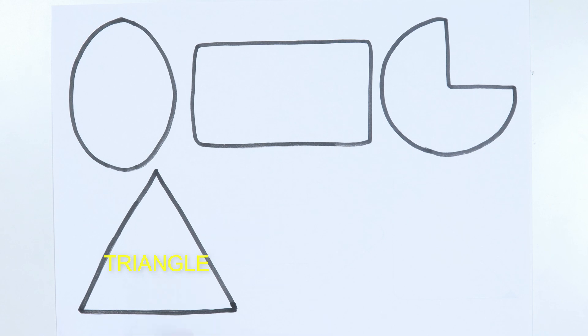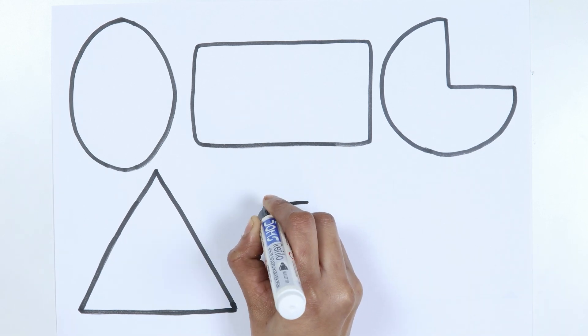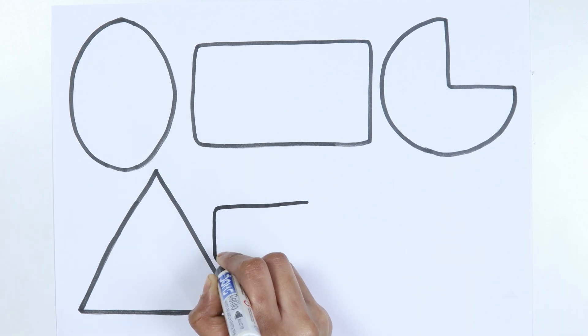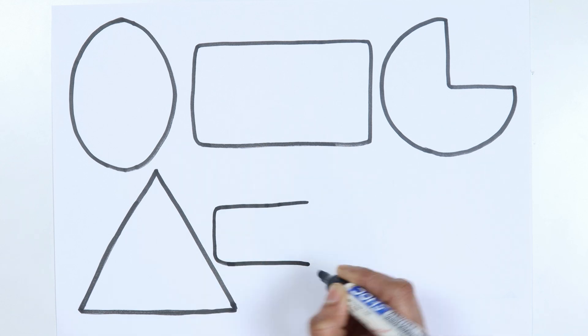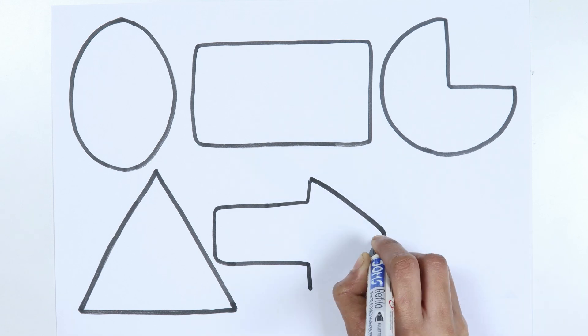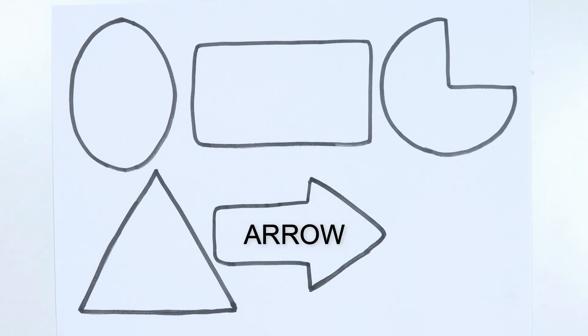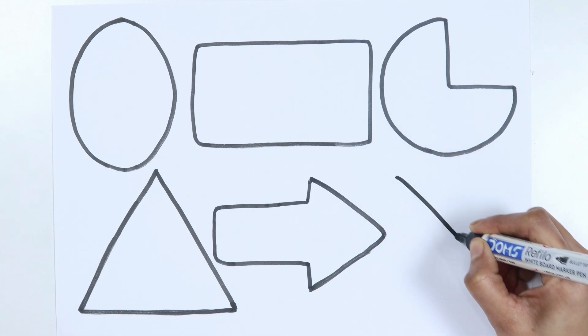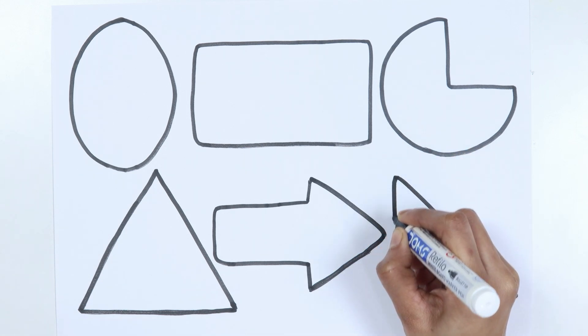Triangle. The blazing sun is gone, when nothing shines upon, then you show your little light, twinkle twinkle all the night.